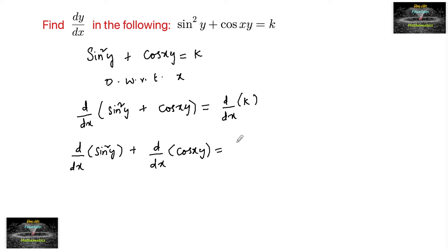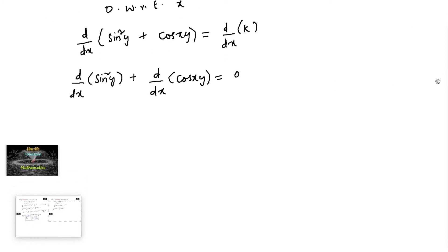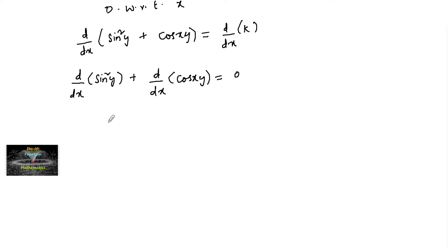The differentiation of the constant is 0. Now differentiate sin²y by applying the chain rule — it's a composition of two functions: x² and sin. So d/dx of sin²y gives 2 sin y into d/dx of sin y.